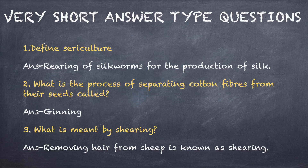Very short answer type questions. First: define sericulture. I hope you all know what sericulture is. The answer is: rearing of silkworms for the production of silk is called sericulture. Your second question: what is the process of separating cotton fibers from their seeds called? The answer is ginning.